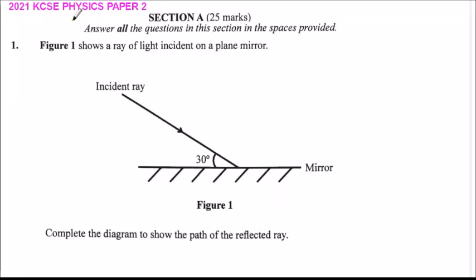This is the 2021 KCSE Physics Paper 2, which was done in March 2022 because of COVID postponement. Section A has five points. Answer all the questions in this section in the spaces provided. You are supposed to show all your work in the space provided for each question. So question number one.